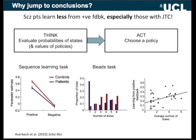Initially people favored the overweighting-evidence camp. But in a study by Bruno Averbeck in Sukhwinder Shergill's lab, using a sequence learning task that quantified how much people learned from positive versus negative feedback, patients seemed to learn less from positive feedback — they were underweighting positive evidence, not overweighting it. He then gave the beads task to those same patients and replicated the classic effect, and showed that the less people learned from positive feedback, the more likely they were to decide on the first bead. So jumping to conclusions was linked to less learning from evidence.